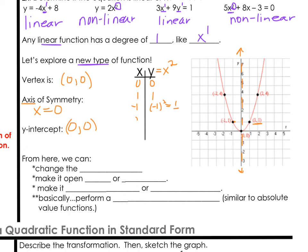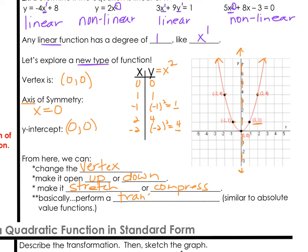2 to the right — 2 squared would be 4, there's that point up here. And negative 2, if you square the entire part, also gives you positive 4. Then we just draw a smooth curve through the points and include arrows up at the very top. From here we can change the vertex, make it open up or down by changing the a value, and make the shape stretch or compress, just like we did with absolute value functions. Essentially, we'll be performing transformations on this equation.